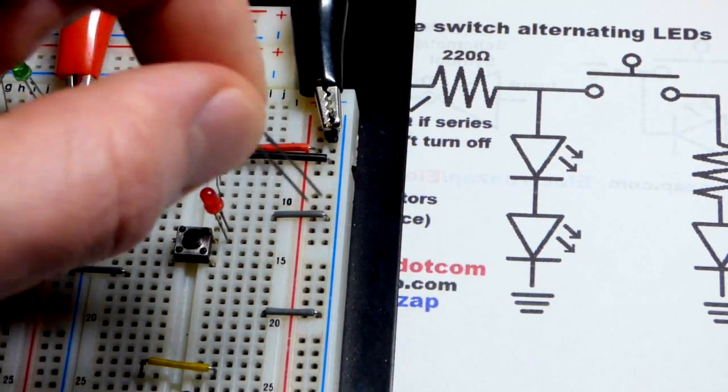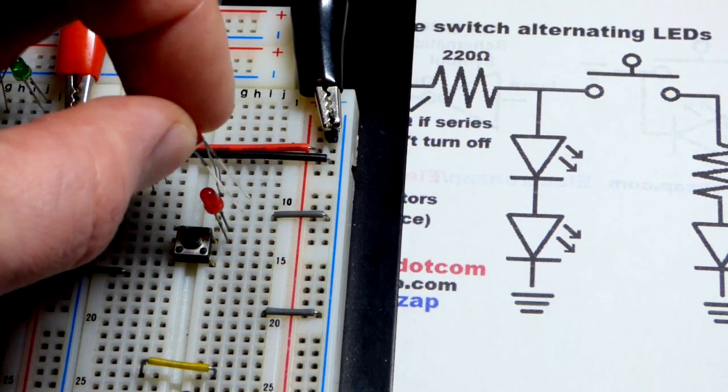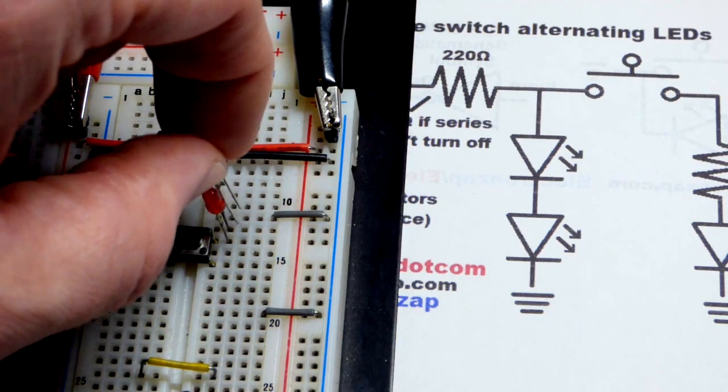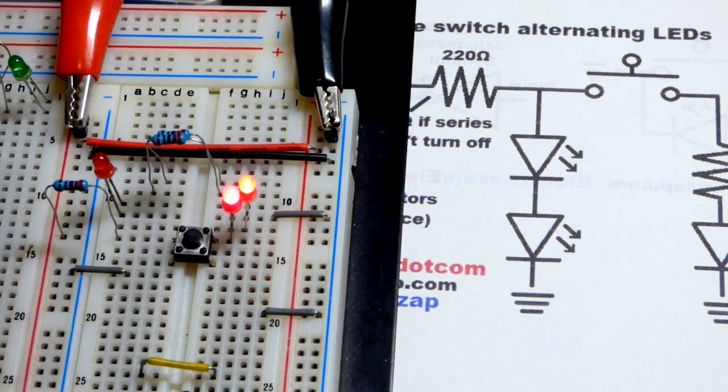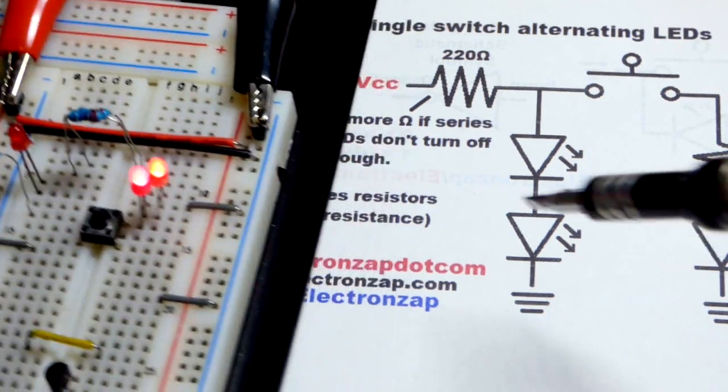So the long lead, the anode, I'm going to put lower on the board. I'm going to touch to the top of the switch right there. And I'm going to do the same thing with this LED, putting it in series. So long lead, the anode to the cathode. Short lead, the cathode to ground. I already have the power supply on. There you can see we have two LEDs that are lit. So of course, they naturally want to light up.